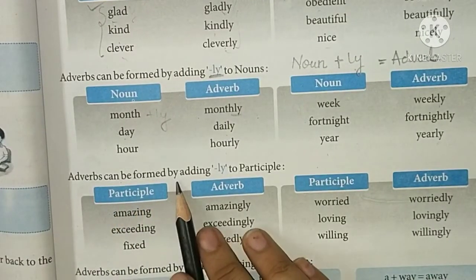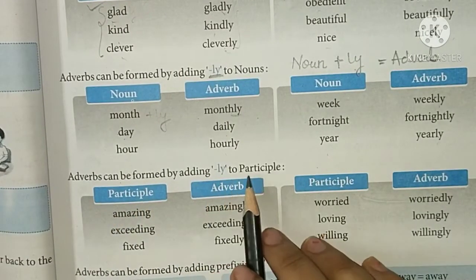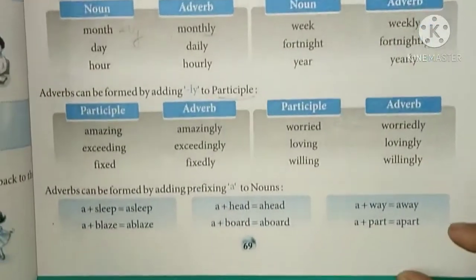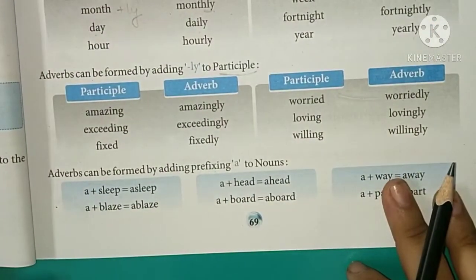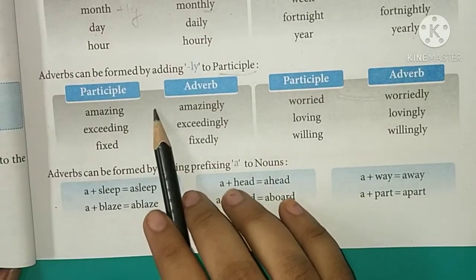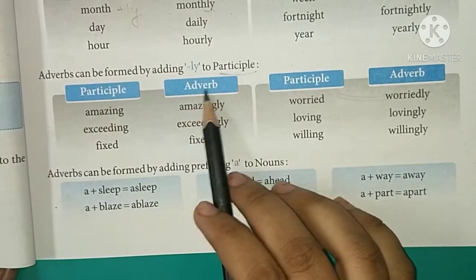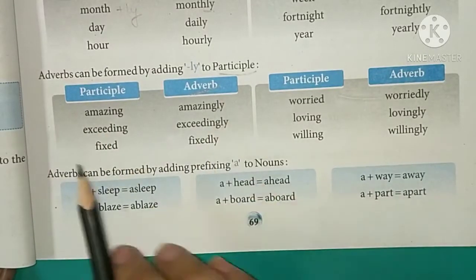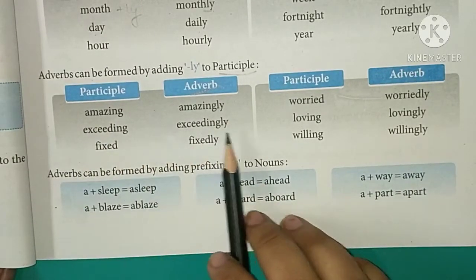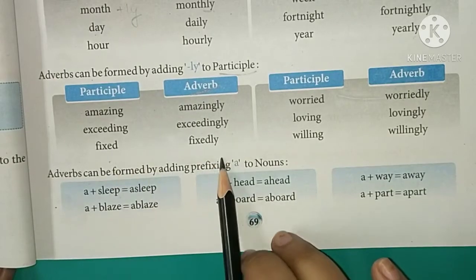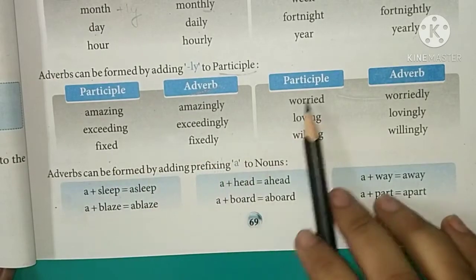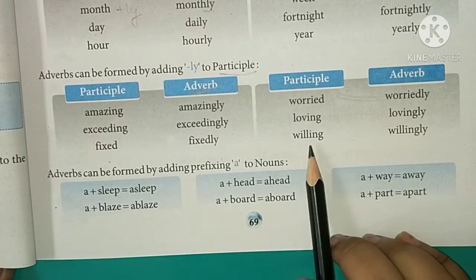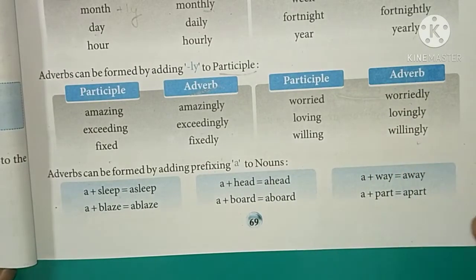Adverbs can be formed by adding -ly to participles. Examples: amazing → amazingly, exciting → excitingly, fixed → fixedly, worried → worriedly, loving → lovingly, willing → willingly.